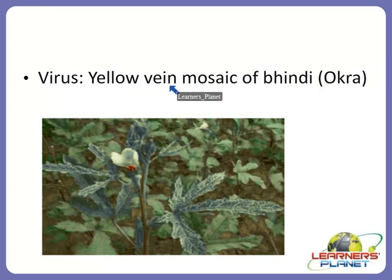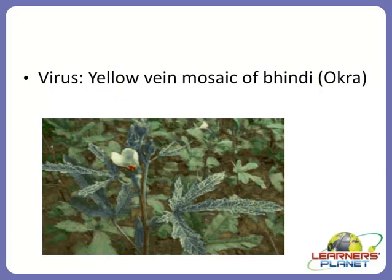Another disease is the viral disease. A common viral disease is the yellow vein mosaic disease, commonly observed in the case of bhindi, that is okra or ladyfinger. Besides, it can also be observed in many different kinds of plants, like sugar cane, peas, different grains like moong. All these are actually getting victim of this particular viral disease.